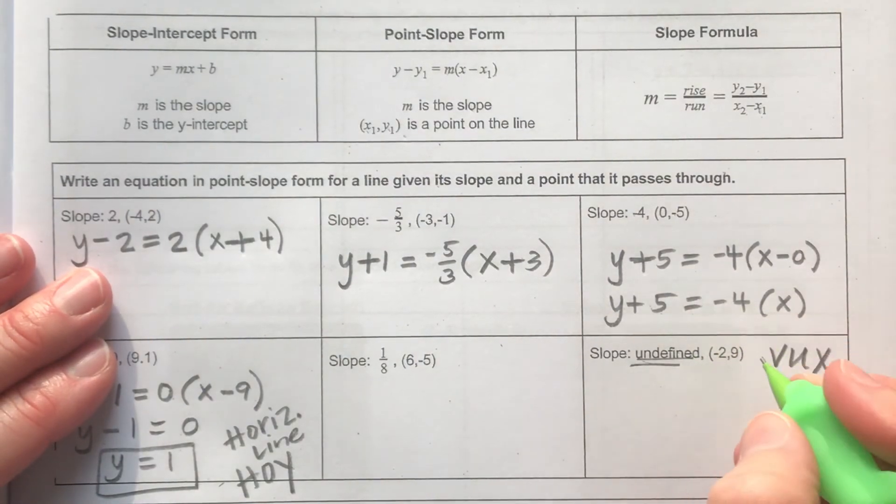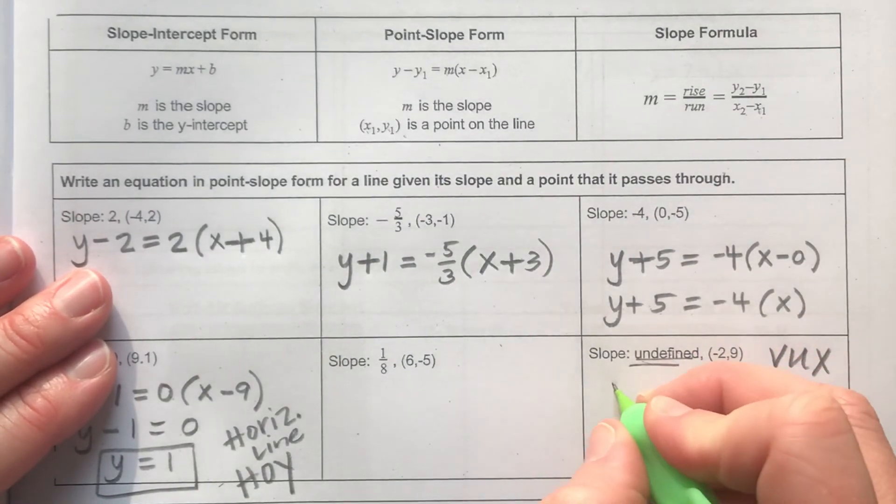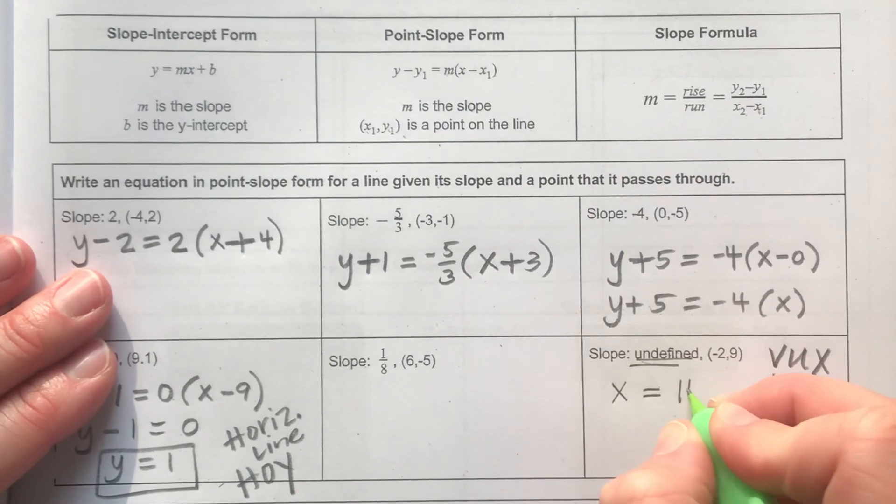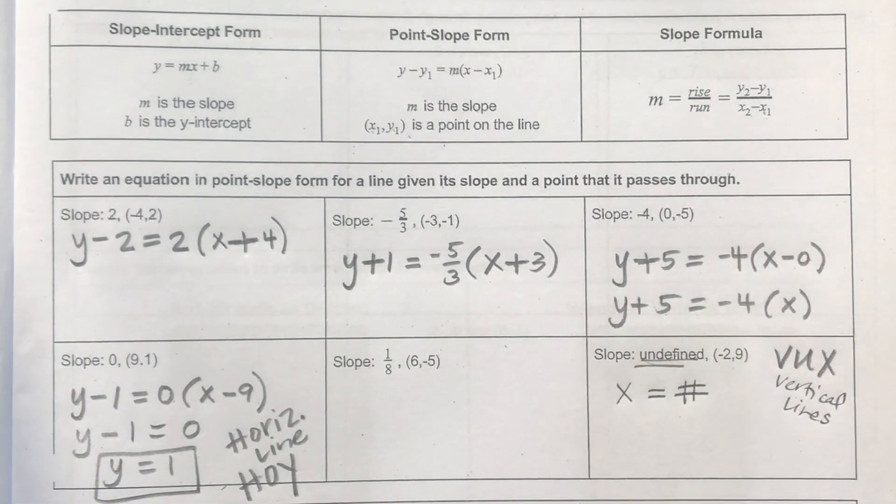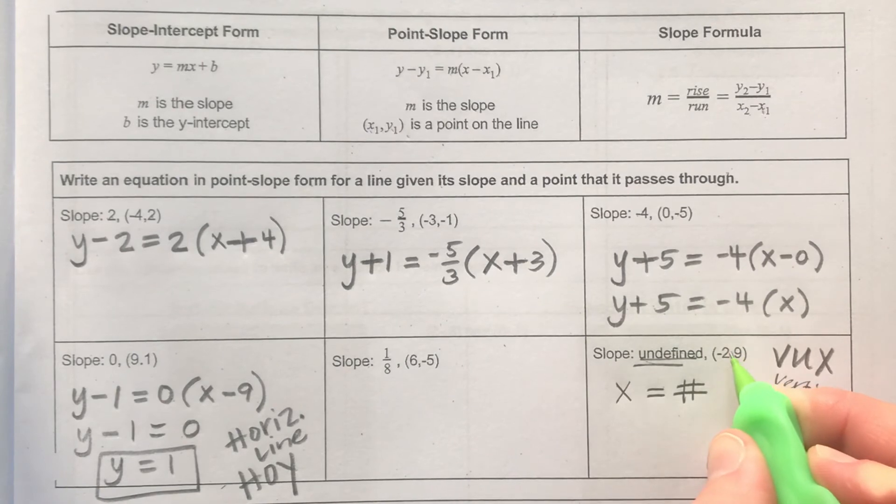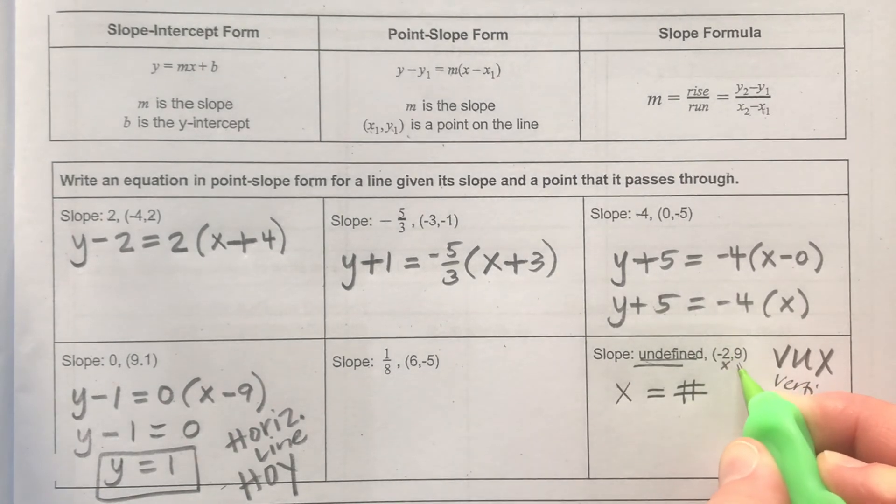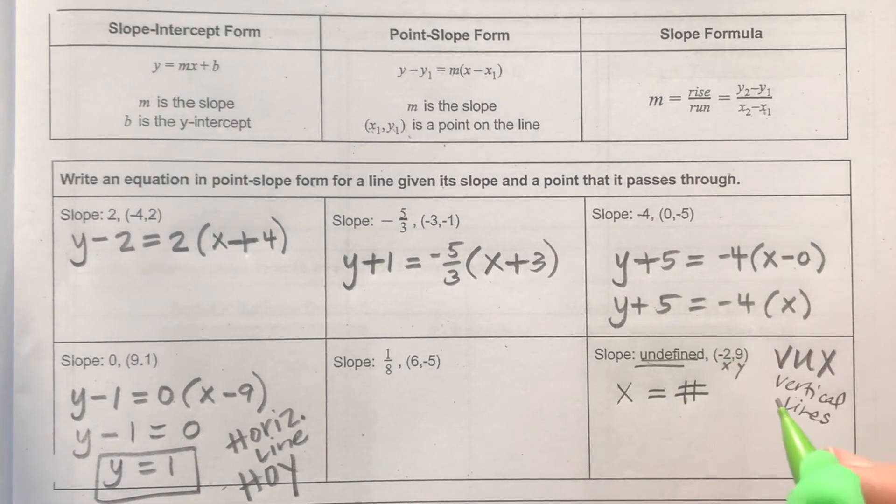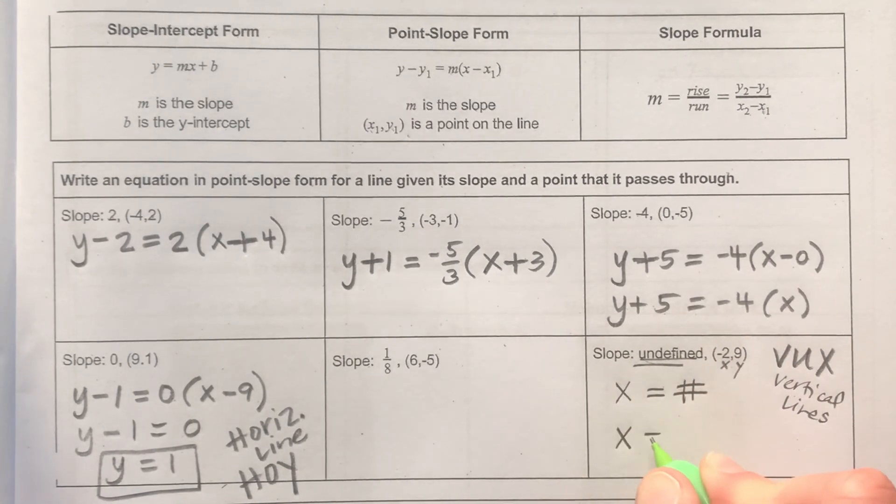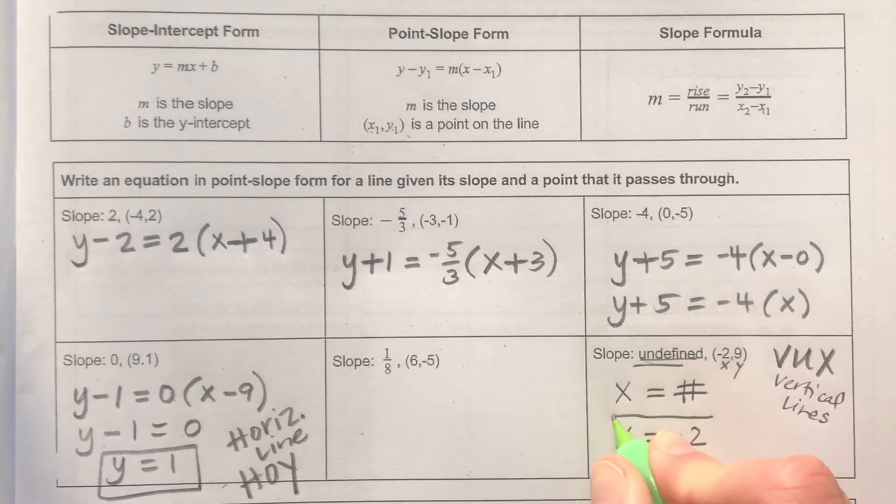If I have undefined slope, I know my x is going to be equal to a number, and that is the equation of my line. Now as I'm looking at my point, I need only the x value of my point, which is negative 2. And so this equation would be x is equal to negative 2.